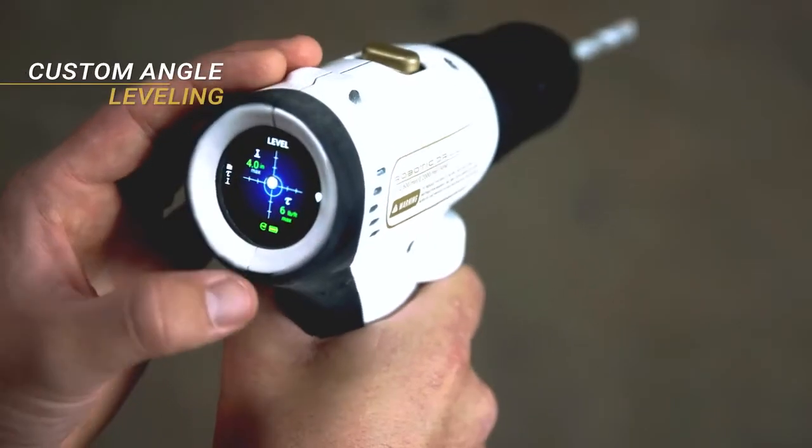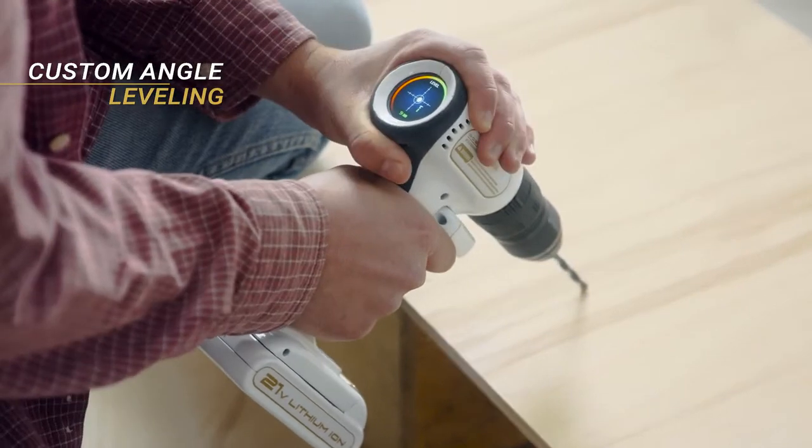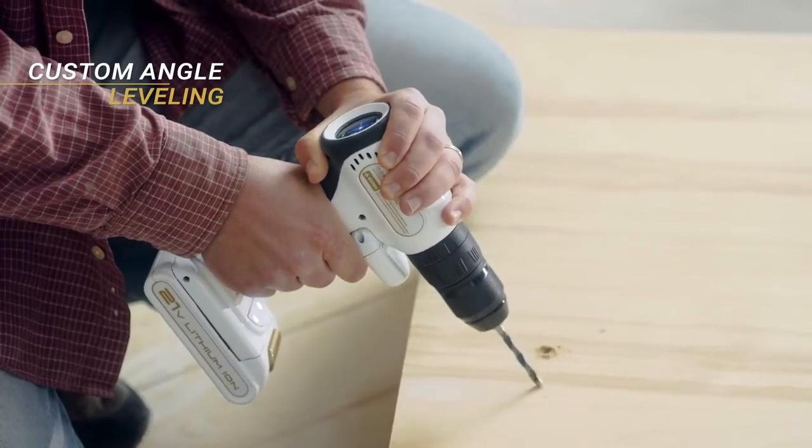Second is custom angle leveling. Tap, save an angle, and any two holes you drill will have the same angle.